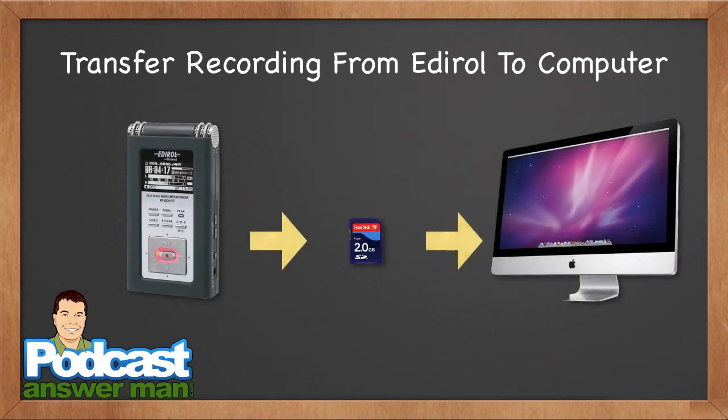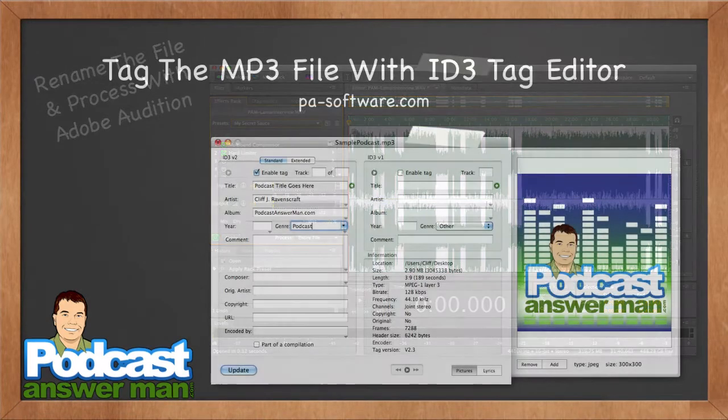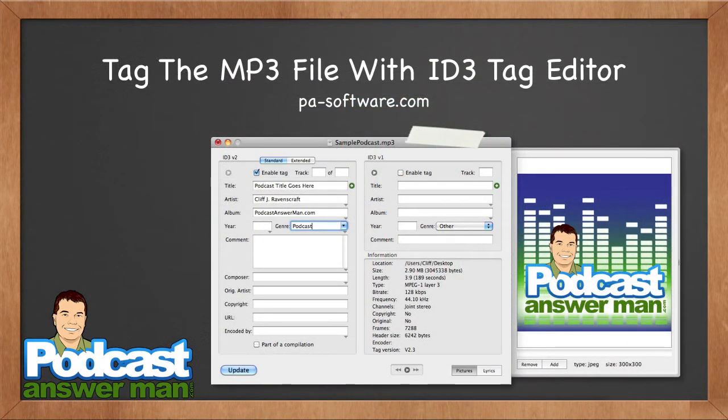Once I stop recording, I take the SD card from the recorder and bring it over to my computer. I drag and drop the wave file and open it in my audio editing software. I don't really need to do any edits since the music, clips, and audio levels are all right. I just run what I call my secret sauce — a multi-band compressor with a hard limiter — which makes it sound the way I like.